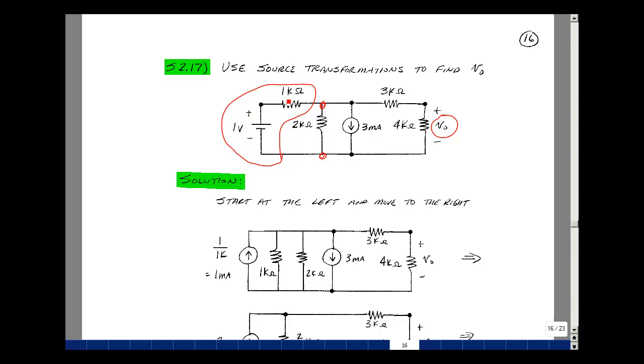The 1 volt divided by 1k is 1 milliamp. The current source is going to point towards where the plus sign was, so it's towards this node. And then what's in parallel with that is the 1k and then the 2k that's here from the circuit.